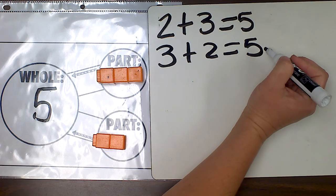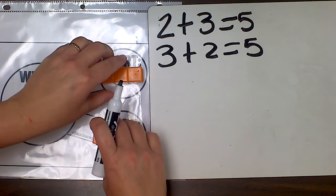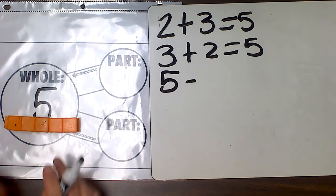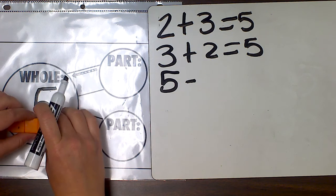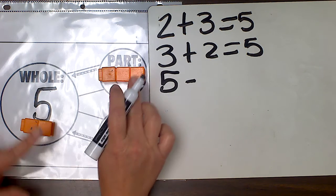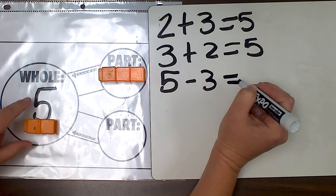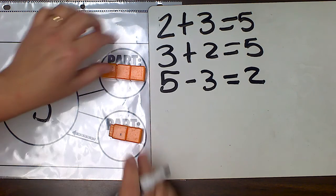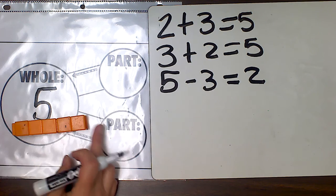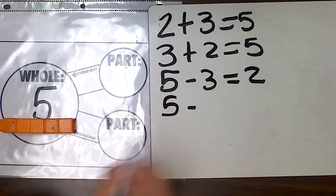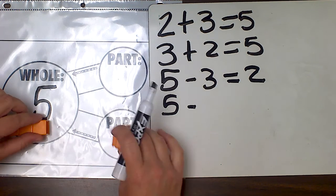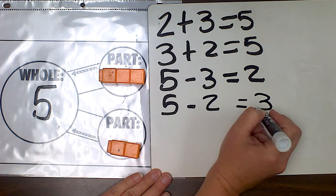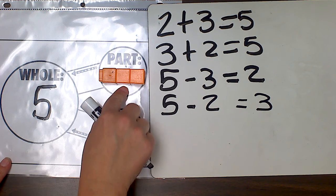Now that I have my two addition sentences, I can write two subtraction sentences. Remember, when we subtract we always start with the whole number. So I'm going to start with my whole number of five and take away three. If I have five and I take the three away, I'm left with a part of two: five minus three is equal to two. I could also start with five and take two away this time: five minus two is equal to three.